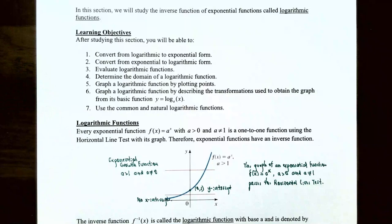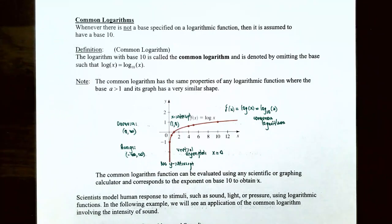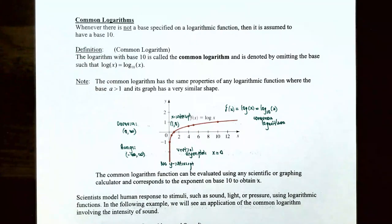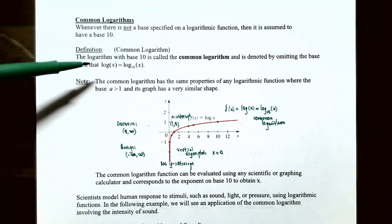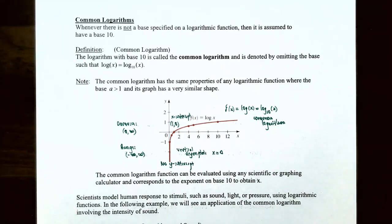In this video we're going to talk about the use of the common and natural logarithmic functions. Whenever there is not a base specified on a logarithmic function it's assumed to be base 10. A logarithm with base 10 is called a common logarithm and it's denoted by omitting the base, such that log base 10 of x is written simply as log of x. The base is assumed to be 10 when written as log of x.